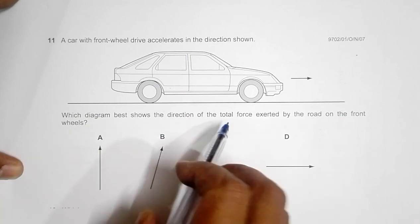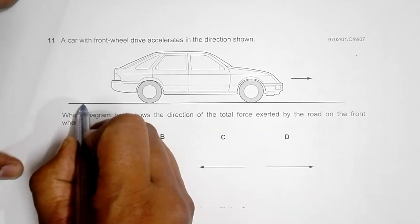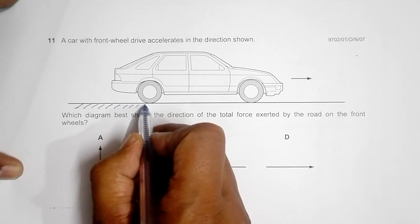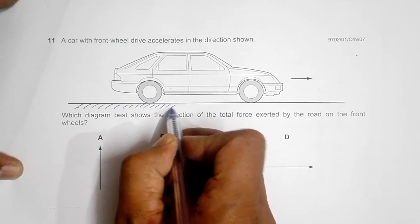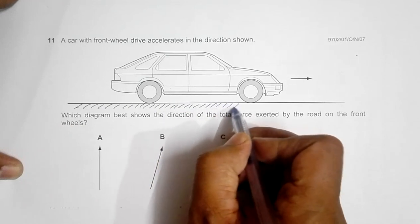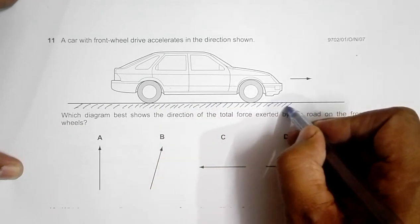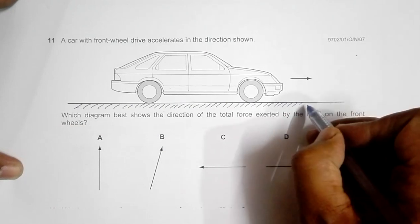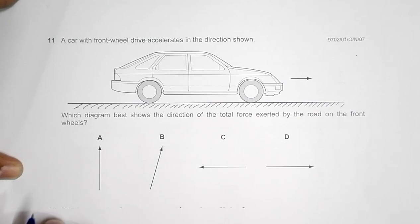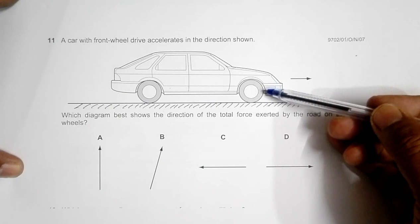We need to find the total force the road exerts on the front wheel. I can draw the road surface somewhat like this, as is done in most textbooks. The front wheel drive means the engine is connected to this front wheel, so it is the one which provides the driving force.